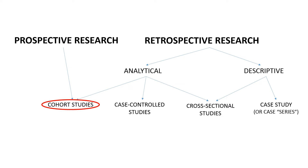The first of these three is cohort studies. This is where a cohort, or a group of individuals sharing some characteristics, are observed. Cohort studies can actually be prospective or retrospective depending on the nature of the research study design. Cohort studies would normally be used to determine incidence, cause, or prognosis.